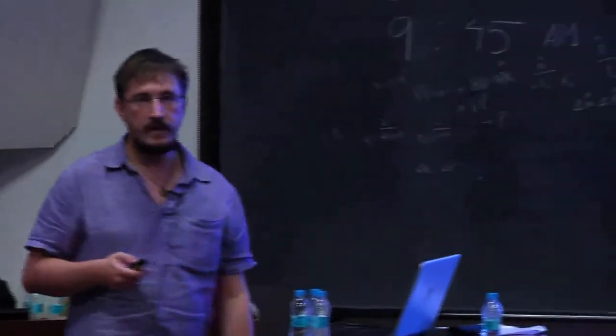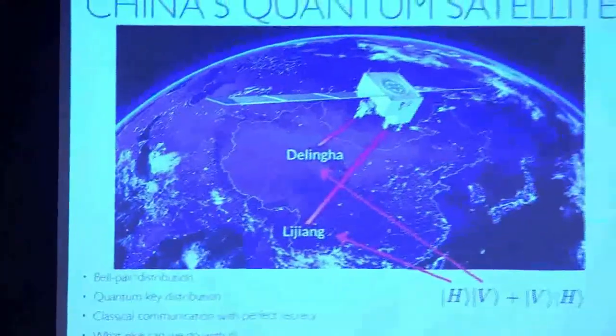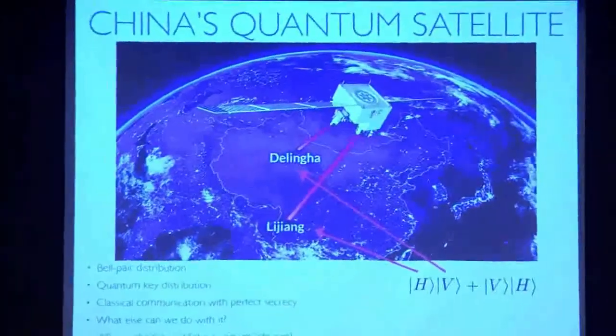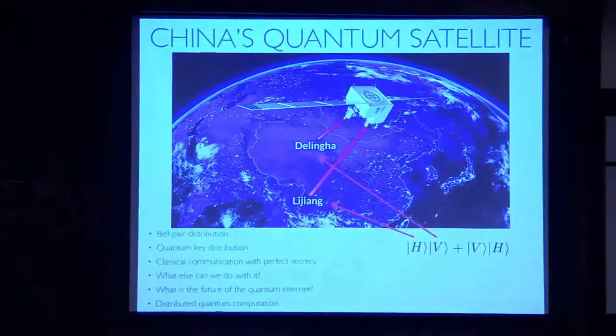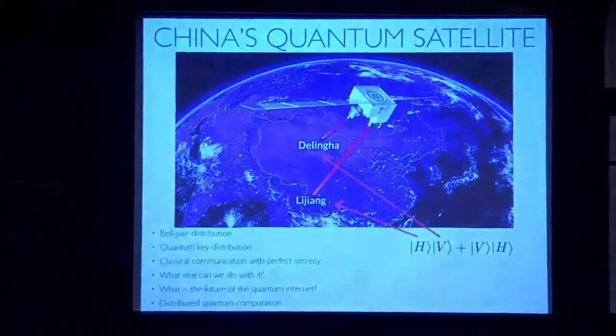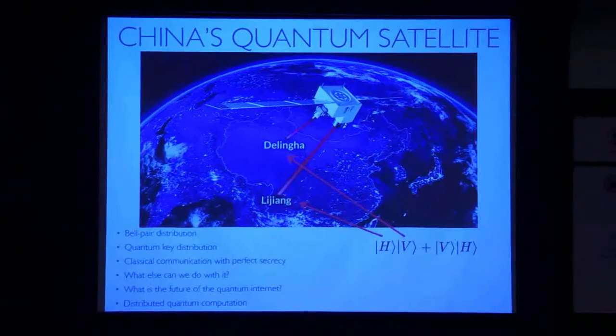I want to share a few ideas specifically related to distributed quantum computing, which I think is a much more exciting prospect. Basically what the satellite does is this: it has a spontaneous parametric down conversion source, and it sends down polarization entangled photons to two points that are within line of sight of the satellite.